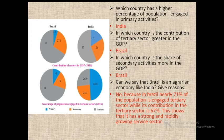Let's study the economic activities of Brazil and India. In these pie charts, you can see the contribution of each sector in the GDP of respective countries and the percentage of population engaged in various activities. Before that, let us understand what is GDP. GDP means Gross Domestic Product — the total value of goods and services produced in a country.